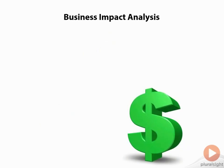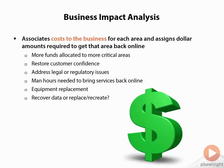The BIA, or business impact analysis, associates costs to the business. Each area of IT, each area of the business — your entire entity from top to bottom — what are the costs if these areas were to go away? You rank those in order and assign dollar amounts required to get each specific area back online. You're going to associate more funds and allocate more resources to the more critical areas.